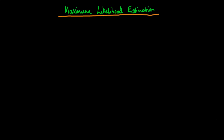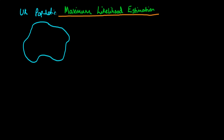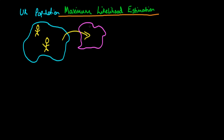In this video I want to provide an introduction to maximum likelihood estimation by means of an example. The example I'm going to be talking about is the UK population. There are something like 70 million individuals in the population and of course we don't have the entirety of the data on them — we only have a sample from that population, and from the sample we have maybe n individuals.